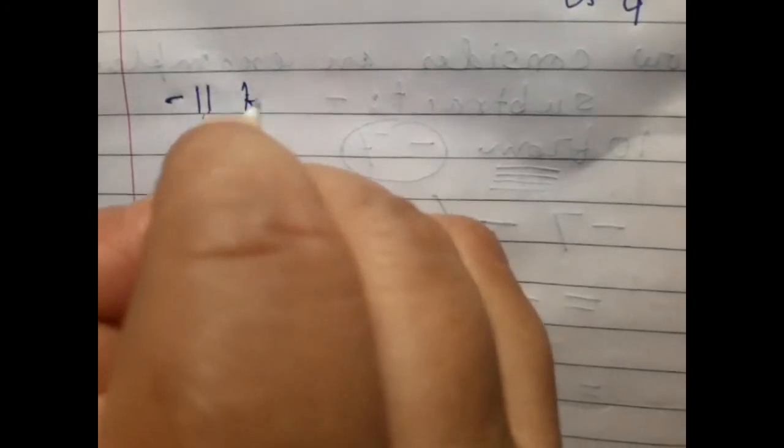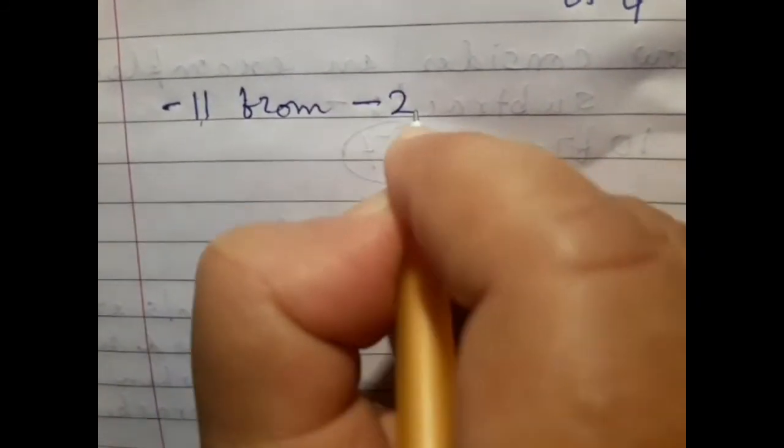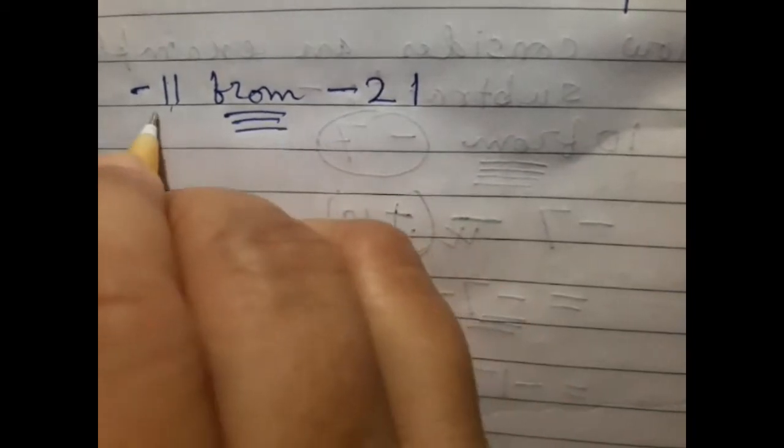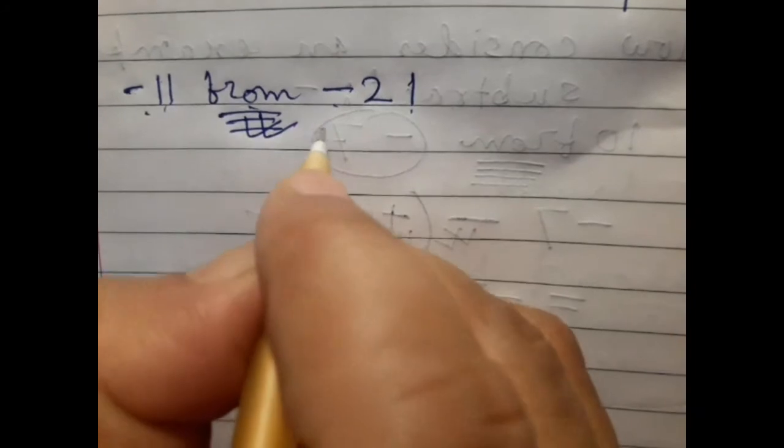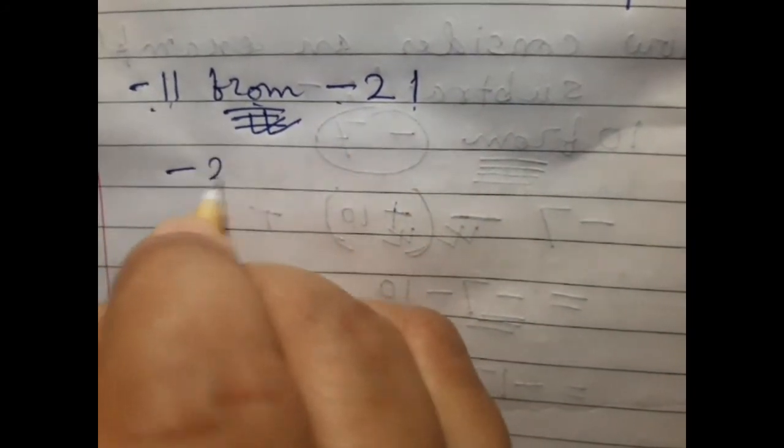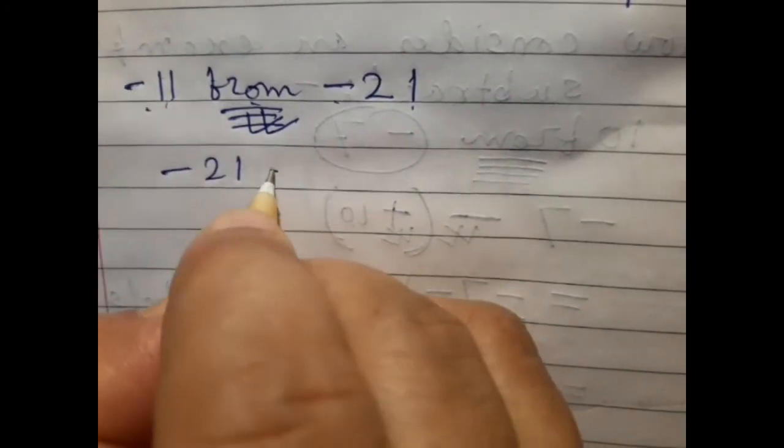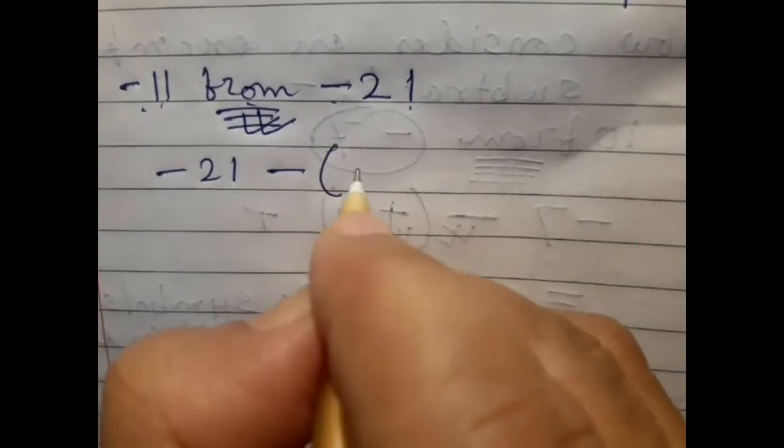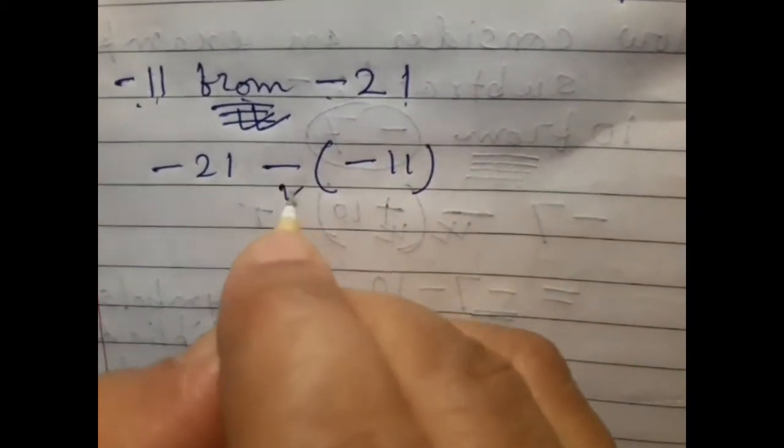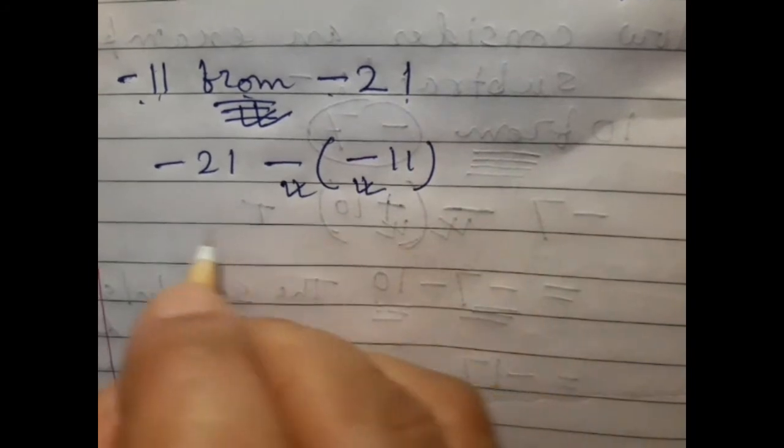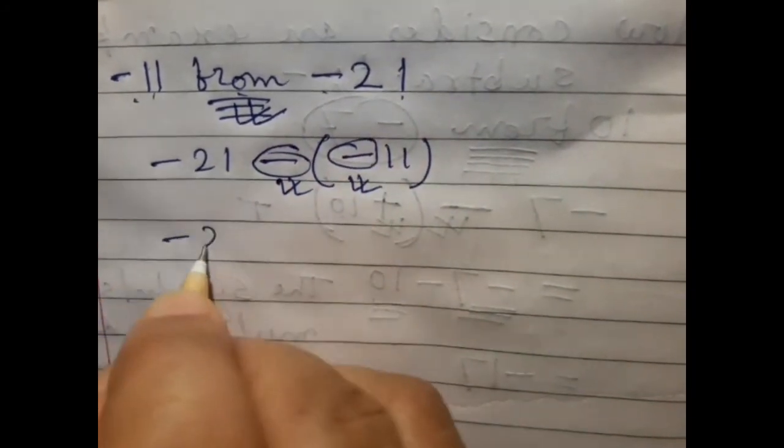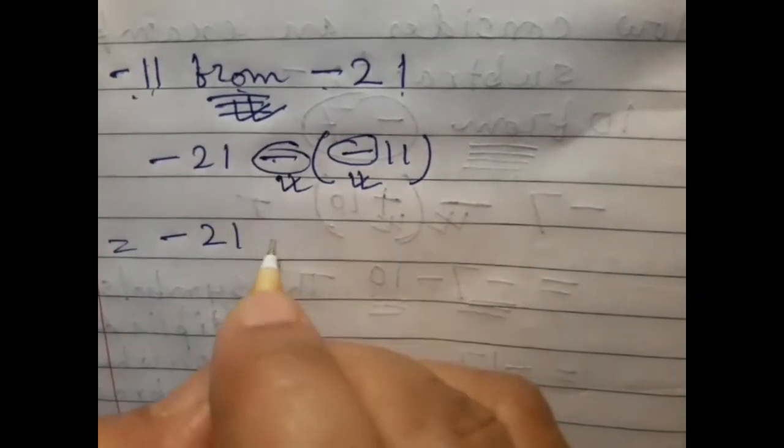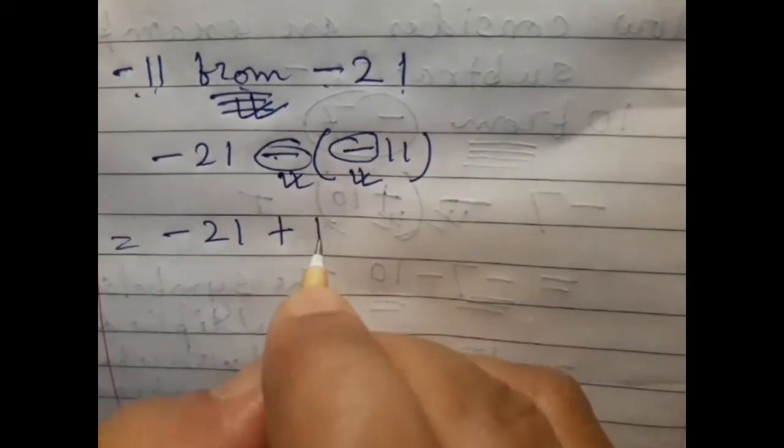Subtract minus 11 from minus 21. The word from. At first we write minus 21 minus bracket minus 11. There is a bracket between two symbols. So we multiply this and this. Minus 21 minus minus is plus 11.